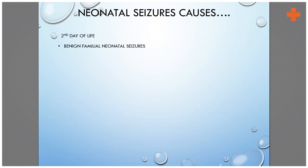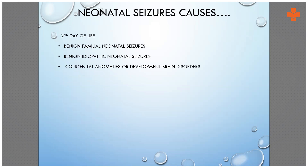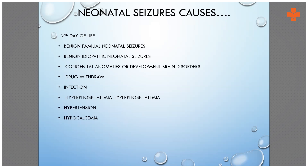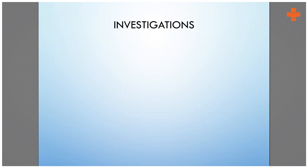From the second day of life onward, causes include benign familial neonatal seizures and benign idiopathic neonatal seizures — both primary causes. Also congenital anomalies and developmental brain disorders, drug withdrawals, infections, hyperphosphatemia, hypertension, hypocalcemia, trauma, and hyponatremia. These latter ones are metabolic abnormalities.